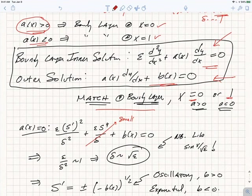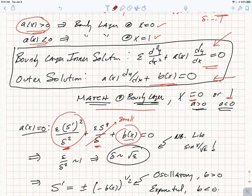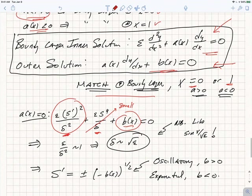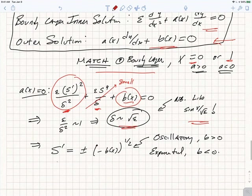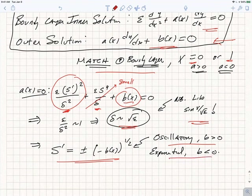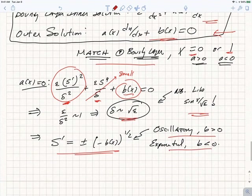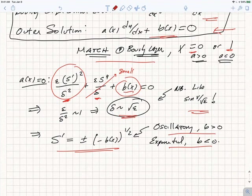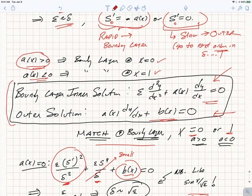If a(x) is strictly equal to 0, the dominant balance shifts: epsilon/delta² must be of order 1, so delta is of order √epsilon — just as we found with sin(x/√epsilon). We get S'² + b(x) = 0, so S' = ±√(−b(x)), giving an oscillatory solution if b > 0 or an exponential solution if b < 0. When we discuss the WKB approximation, we'll develop this in greater detail. Next time, I want to talk about boundary layer theory and how we actually carry out this program.